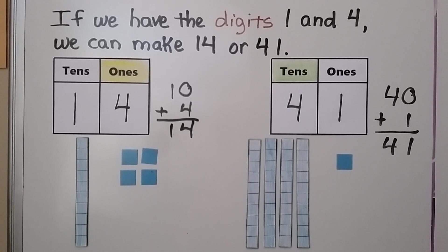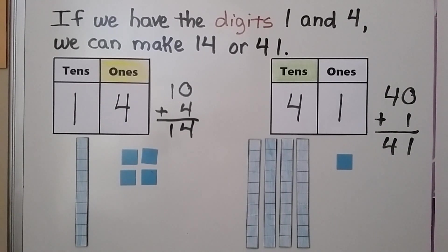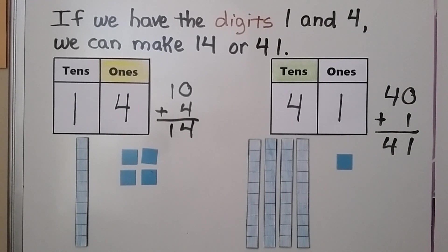They're both alike because they have 1 and 4 as digits, but they're different because the 1 and 4 represent — that means stands for — different values. The tens digit is to the left of the ones digit.